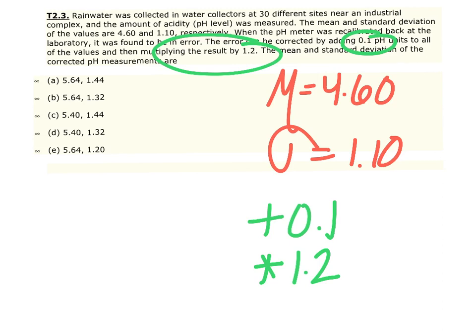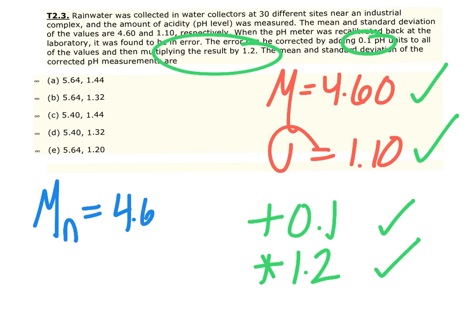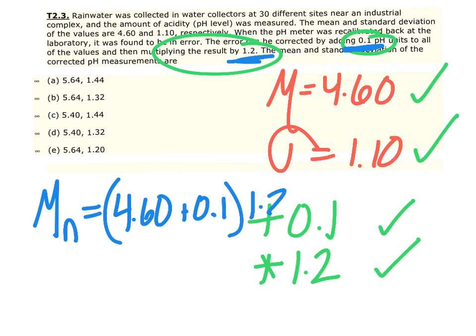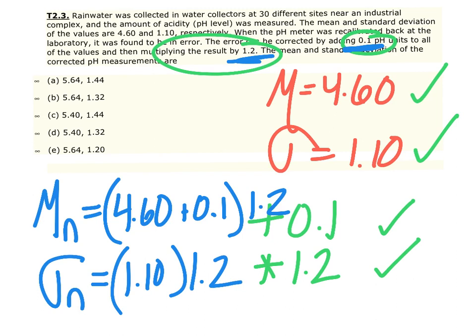What you need to remember is how measures of center and measures of spread are impacted when you add data and when you multiply it. For the new mean, take 4.60, add back 0.1, then multiply by 1.2. Measures of center are impacted by adding, subtracting, multiplying, and dividing. Whereas the measure of spread — sigma — we take the original 1.10 and only multiply it by 1.2, because standard deviation is only impacted by multiplication and division. The new mean and standard deviation is letter B.